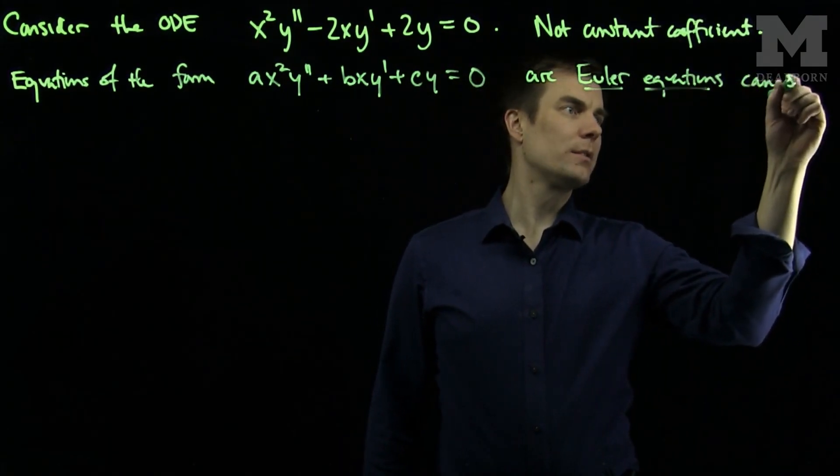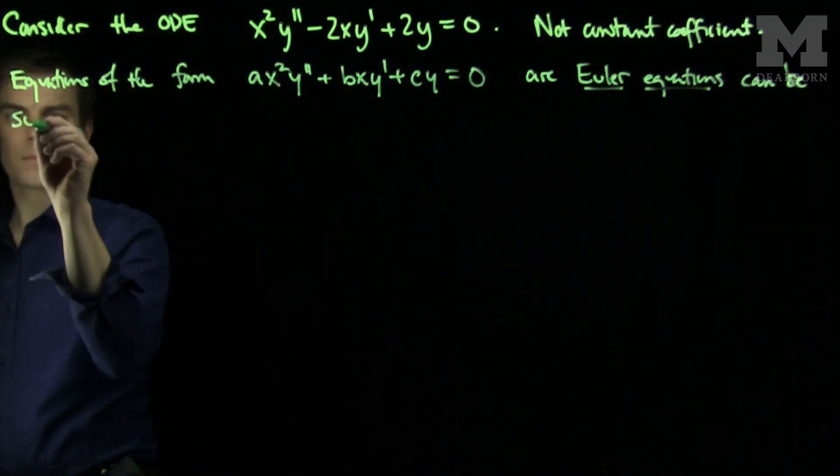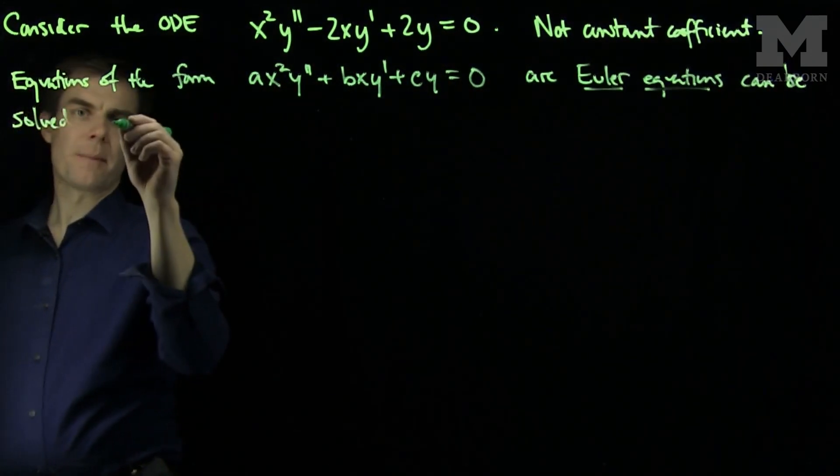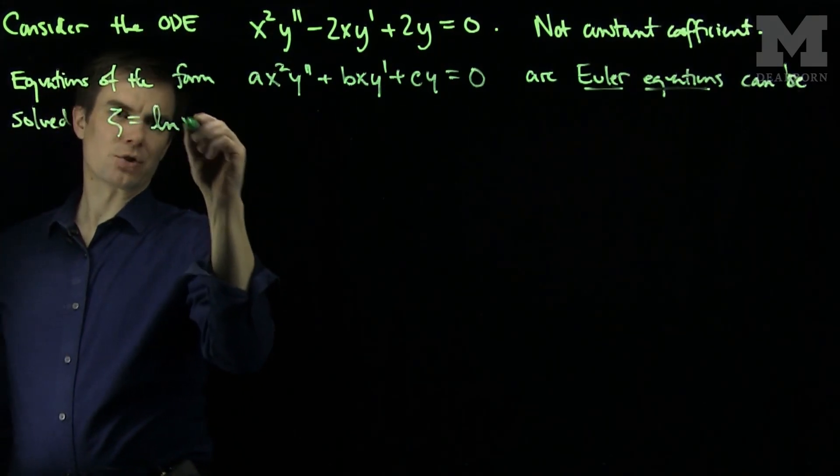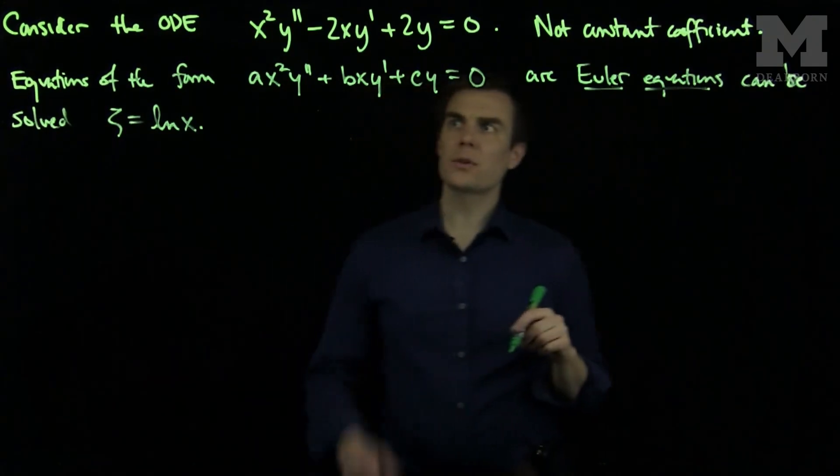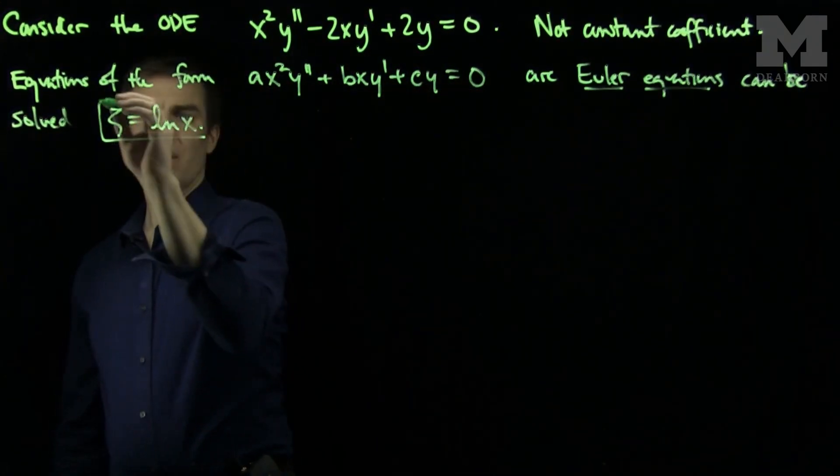And they can be solved by making the substitution zeta is the natural log of x. So let's look at our example and see how this substitution can help us solve the problem.